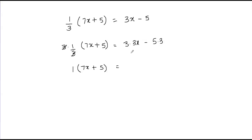This equals 3 times 3x, which is 9x, and minus 5 times 3, which is 15. So 1 times (7x plus 5) gives me 7x plus 5, and this equals 9x minus 15.